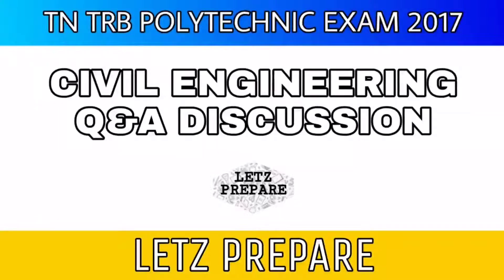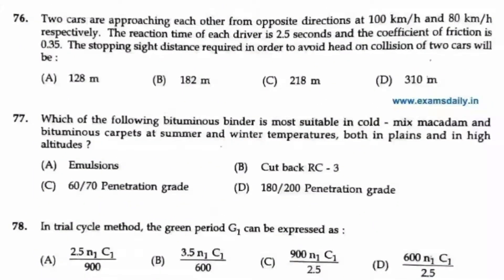Let's prepare on the TRB Polytechnic exam 2017 civil engineering question paper. Question number 76. Two cars are approaching each other from opposite directions at 100 km per hour and 80 km per hour respectively. The reaction time of each driver is 2.5 seconds and the coefficient of friction is 0.35. The stopping sight distance required in order to avoid head-on collision of two cars will be what? So this is the question given.